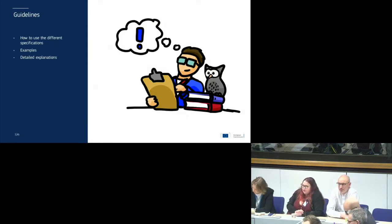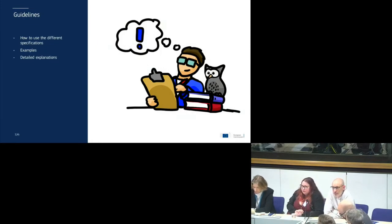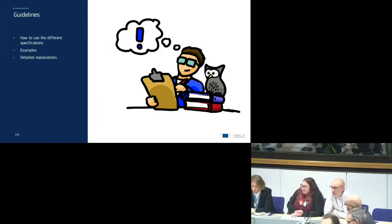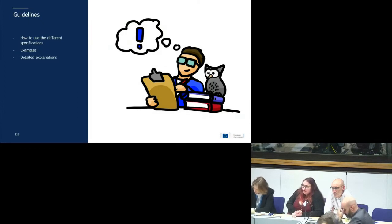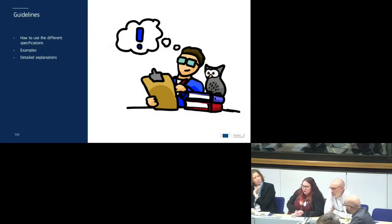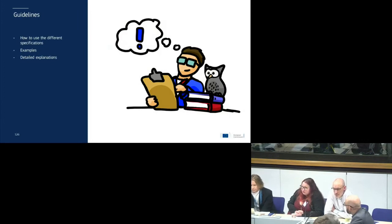I'm totally a nerd when it comes to specifications. We need to have guidelines on how to implement the specifications and how to use them. We need examples — and we need examples like the test packages, but also for the different content information type specifications. You need detailed explanations on some parts of the specifications. And a big thing is going to be training in specifications. Not too many people know all the standards that need to be used, so training will be offered.